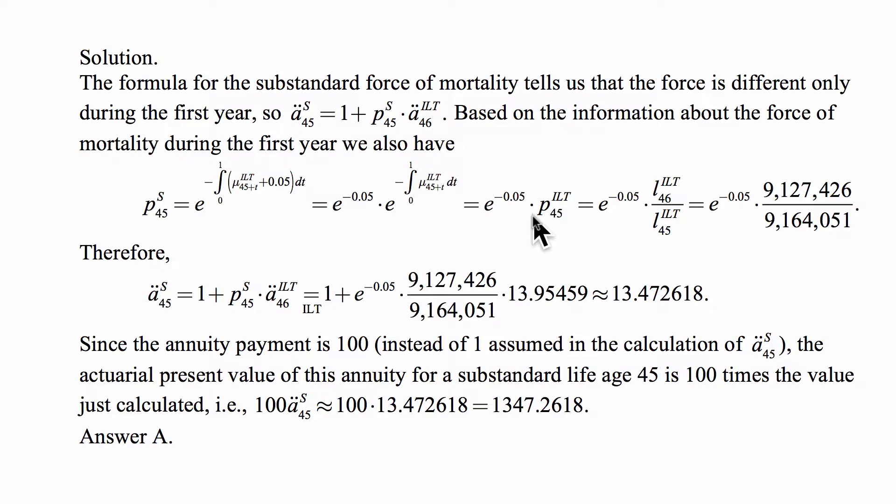This equals e to the minus 0.05 minus the integral from 0 to 1 of the force for illustrative life table. We can write this as e to the minus 0.05 times e to the minus integral from 0 to 1 of the force of mortality under the illustrative life table. This expression is simply the probability of survival from age 45 to age 46 under the force of mortality that rules in the illustrative life table, and we can calculate this as the size of the population at age 46 divided by the size of the population at age 45.